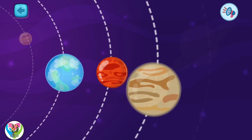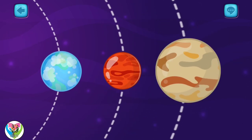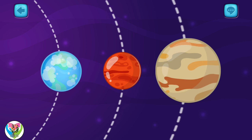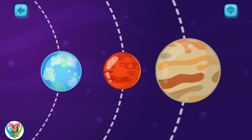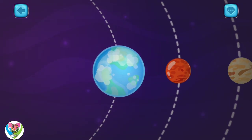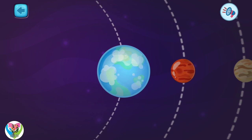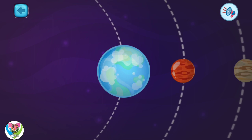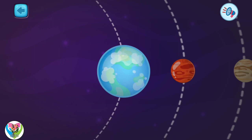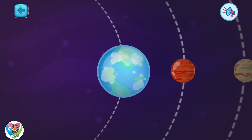Pick one. This is planet Earth. It is the third from the sun. This is the planet where we live. There is everything you can see around you.